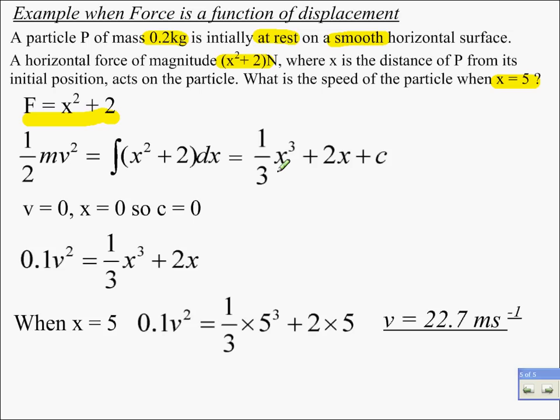Half mv squared is the integral of that force with respect to x. So, we integrate that, use initial conditions, and we get c is 0. So, our equation is a half mv squared equals the integral of the force with respect to x. When x is 5, put that in and rearrange the equation and we get the velocity as 22.7 metres per second.